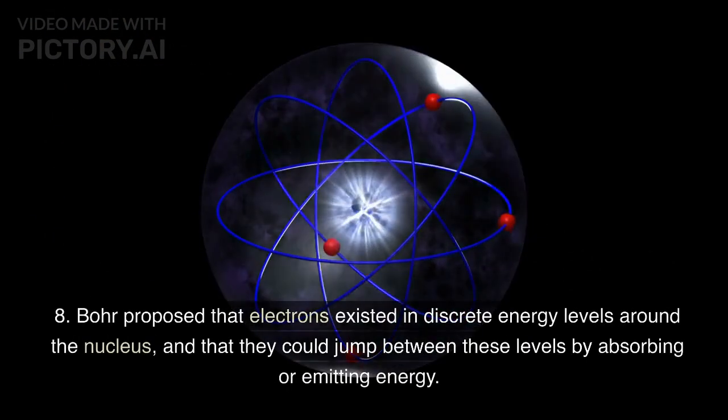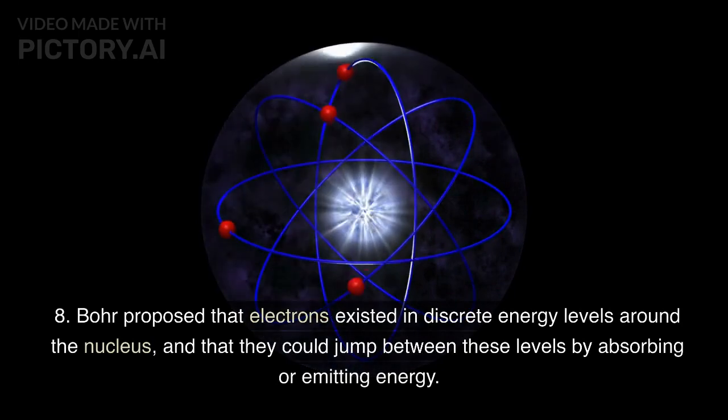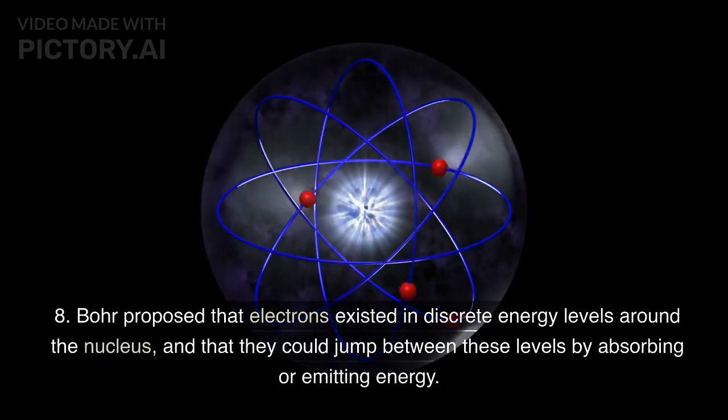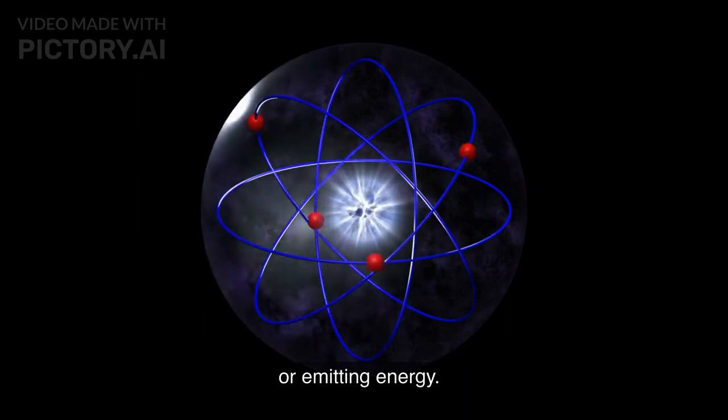Bohr proposed that electrons existed in discrete energy levels around the nucleus, and that they could jump between these levels by absorbing or emitting energy.